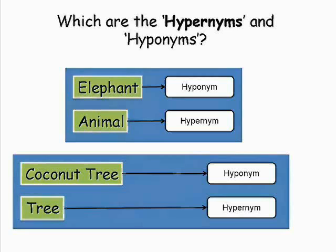Elephant is a type of animal. Animal is the name of the group which elephant is a member of. Coconut tree is a type of tree. Tree is the name of the group which coconut tree is a member of.